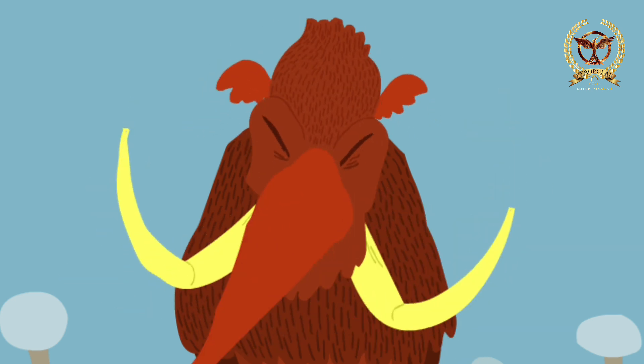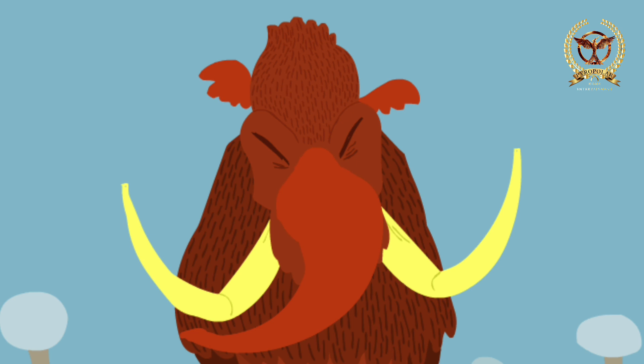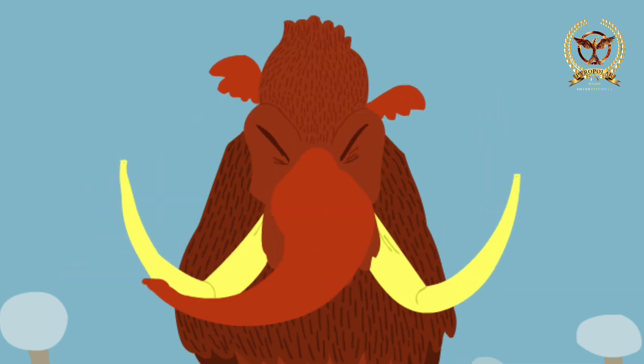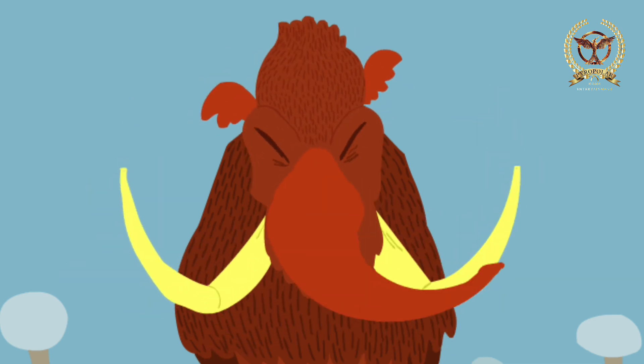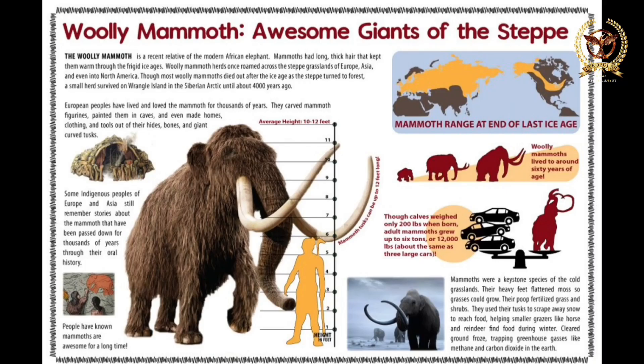The woolly mammoths were the last species to evolve. They evolved in East Asia about 4 lakh years ago. Some survived on Russia's Rangel Island in the Arctic Ocean and on the Temir Peninsula in mainland Siberia from about 3,700 to 4,700 years ago. They were also used during the construction of the Great Pyramid of Ancient Egypt.